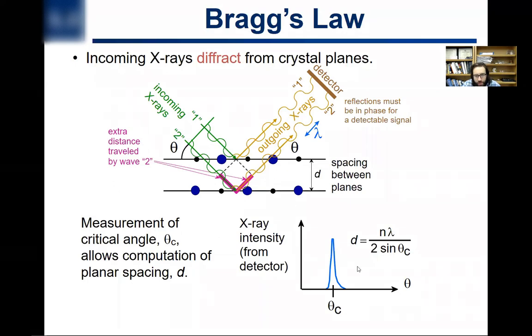So this is Bragg's law right here. D is what you're looking for - that's the spacing between the atoms. N is any integer, could be one, two, etc. Lambda is the wavelength of the x-rays, so this is going to be in the small nanometers. Divided by two sine, and theta is what you're varying in the experiment. At critical theta, which is why there's a C here, you'll get a peak. Where will you get a peak? Well, that depends on where you have constructive interference.